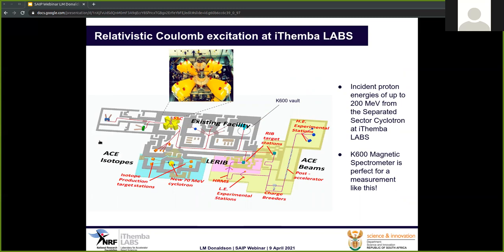Now, Coulomb excitation experiments at iThemba Labs specifically. Here you can see a layout of iThemba Labs showing the existing facility, with additional sections that will form part of the South African Isotope Facility. The beam is generated at the ion source and moves through to the separated sector cyclotron where it is accelerated — at this facility we can get energies up to 200 MeV. After the SSC, the beam is directed through the beam line using a series of magnets to the K600 spectrometer, which is perfect for these relativistic Coulomb excitation measurements.